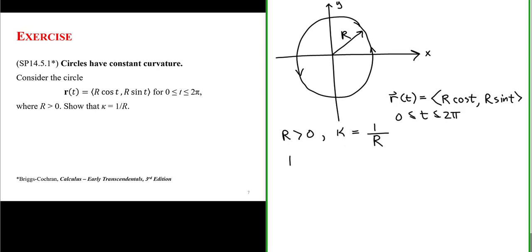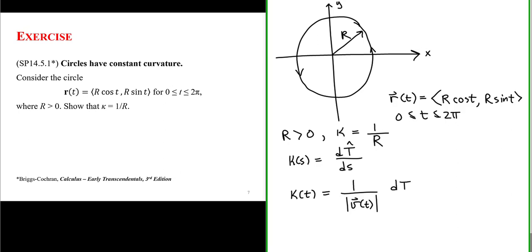To do that, let's look at the definition of curvature. Curvature as a function of arc length is defined as the rate of change of a unit tangent vector with respect to arc length. However, if you have a parameterized position vector like we have here, it is often more convenient to express curvature in terms of the parameter. When we do that, curvature is equal to 1 over the speed of the curve — the magnitude of the velocity — times the rate at which the unit tangent vector changes with respect to our parameter t.